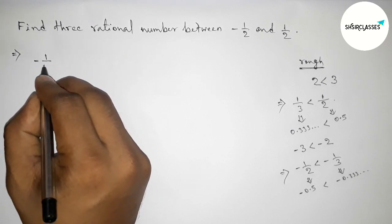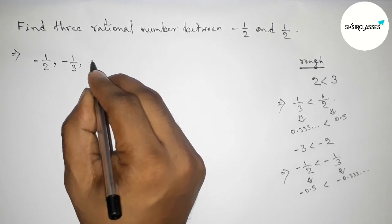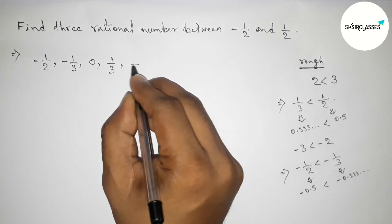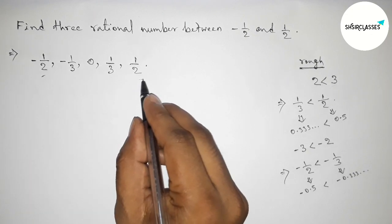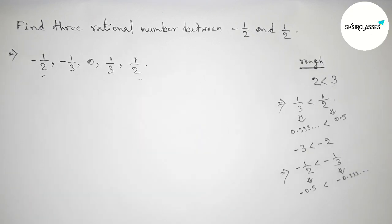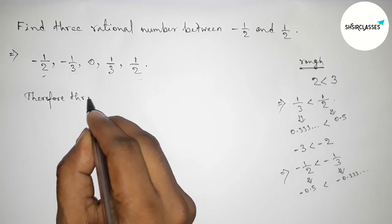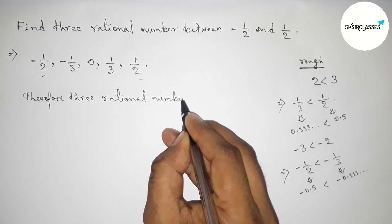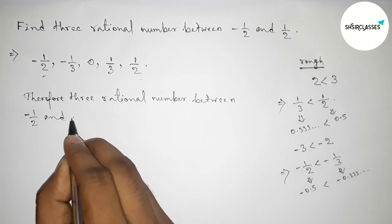So -1/3 and 0, then 1/3, then 1/2. So here, between -1/2 and 1/2 are: first one is -1/3, then 0, then 1/3.